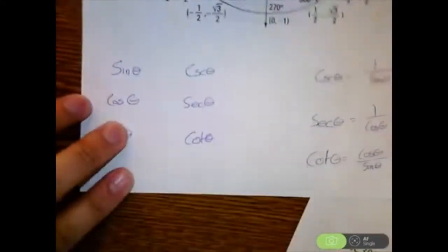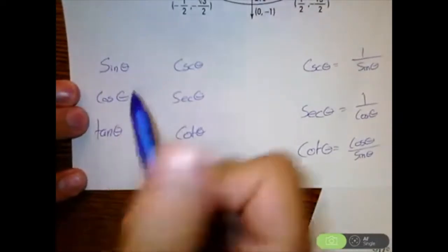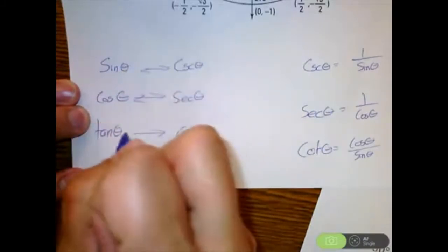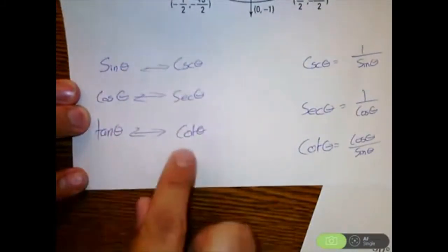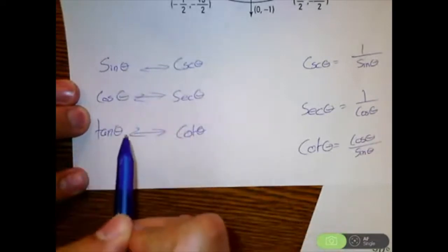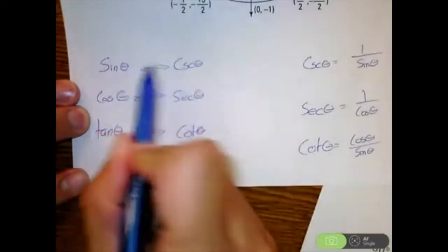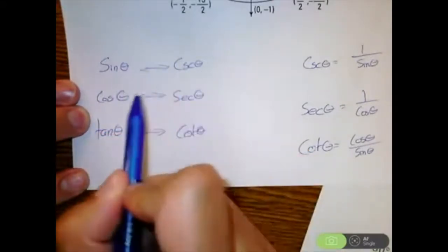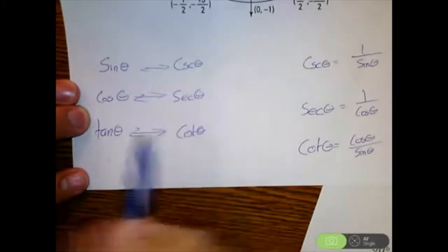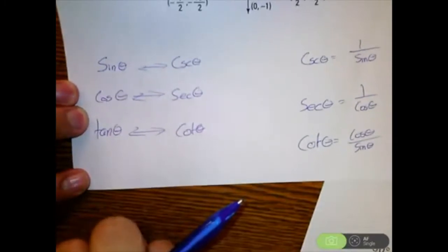To do cosecant, secant, and cotangent, the first thing you need to remember is how sine and cosecant are connected, cosine and secant are connected, and tangent and cotangent are connected. If you know sine, cosine, and tangent, all you have to do is find the reciprocal. The reciprocal of sine is cosecant, the reciprocal of cosine is secant, and the reciprocal of tangent is cotangent. Just flip it.